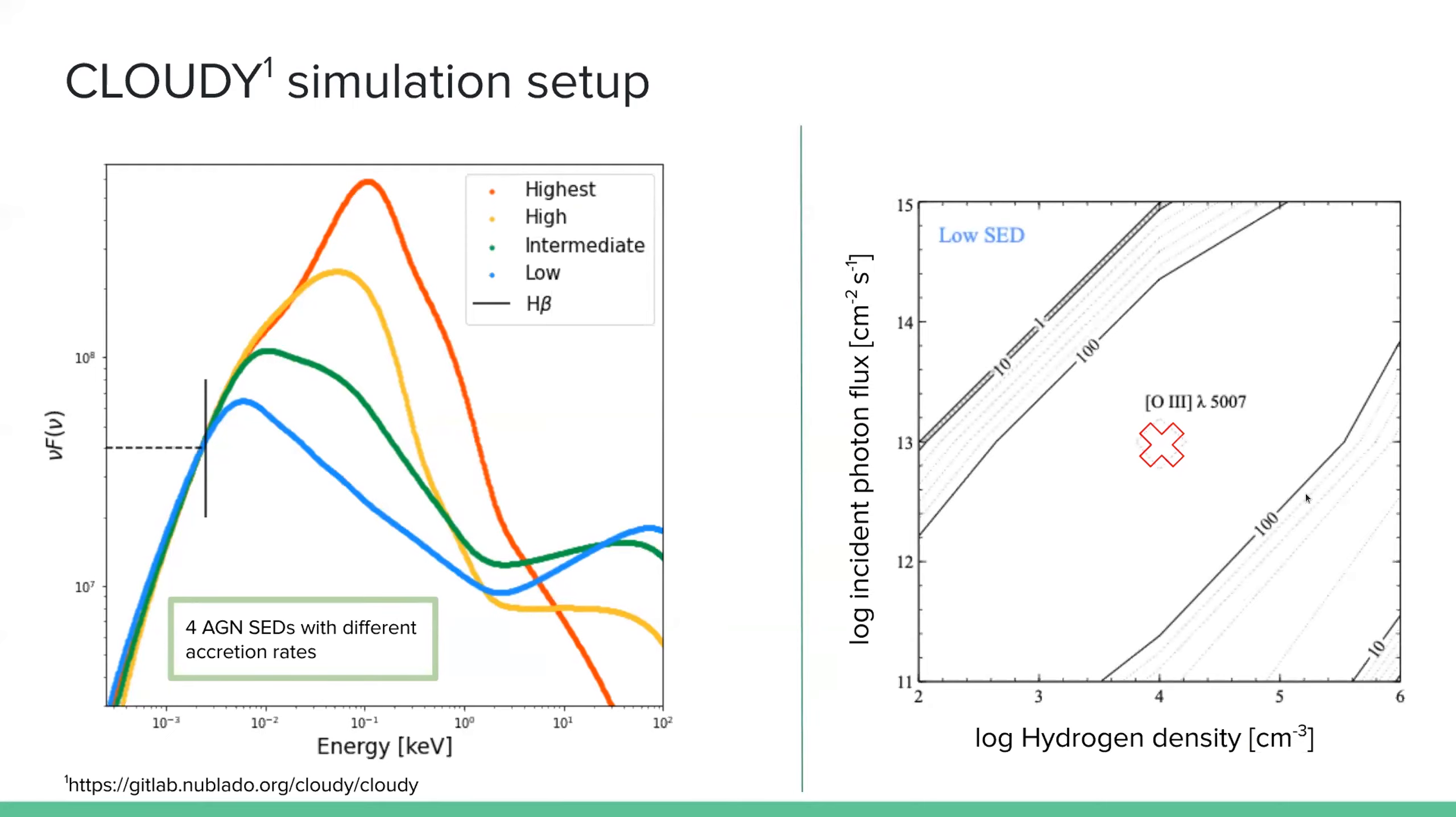The contour lines here is the line intensity for the O3, which is produced by the low accretion rates AGN-SED.